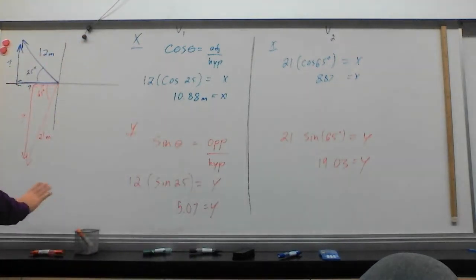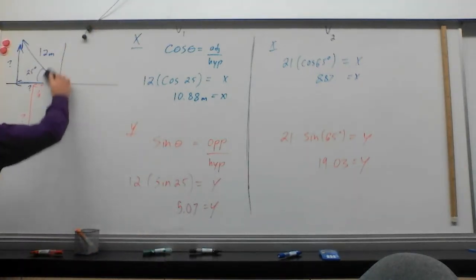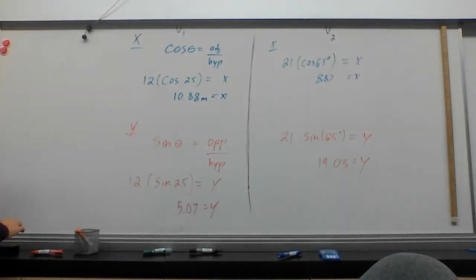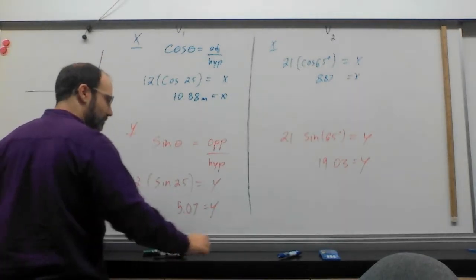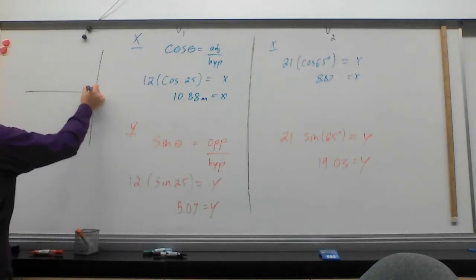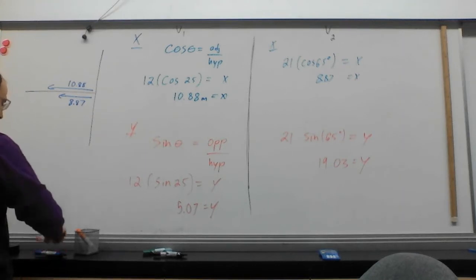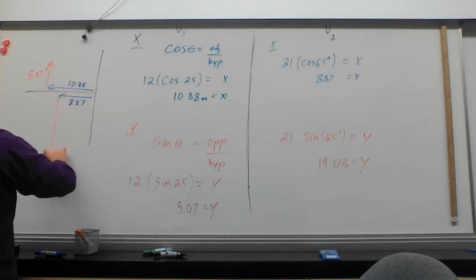I can now redraw this diagram. And I can make all of this, hopefully, a lot clearer. Because it's no longer a case that I have these two weird vectors that are sitting off at an angle. What do I have? I have one vector pointing this way at 10.88. I have a second vector pointing this way at 8.87. I have one vector pointing up at 5.07. And another vector pointing down at 19.03.